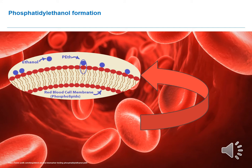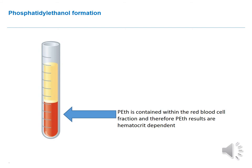For phosphatidylethanol, however, this equal distribution between red blood cell fraction and plasma fraction is not the case. PET accumulates only within the red blood cell fraction and is not readily present within the plasma fraction of the blood. This means, as shown here in an authentic blood sample after centrifugation, that PET is contained within the 30 to 50% of red blood cells typically found in human blood. Therefore, PET results are hematocrit dependent and this dependency should be accounted for during measurement.